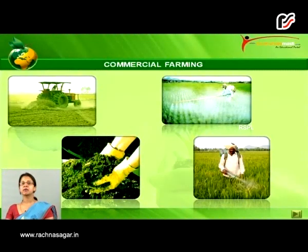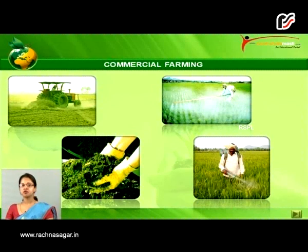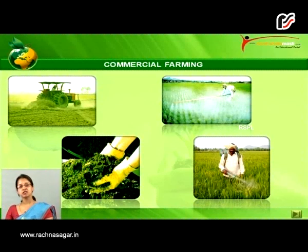Then we move to commercial farming. A high amount of modern inputs are mainly used — HYV seeds, fertilizers, insecticides, and pesticides — to obtain high productivity. The commercialization of crops differs from one region to another. For example, rice is a commercial crop in Haryana but a subsistence crop in Odisha.